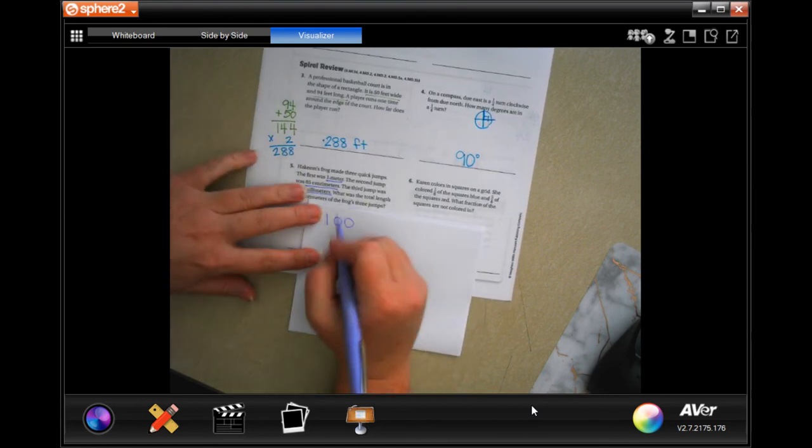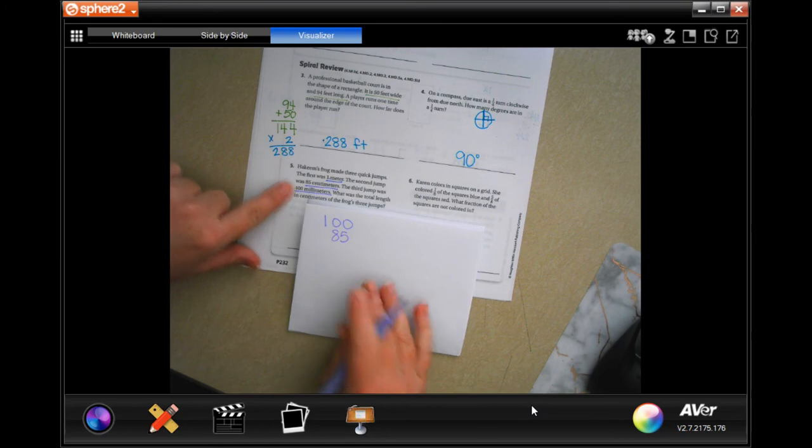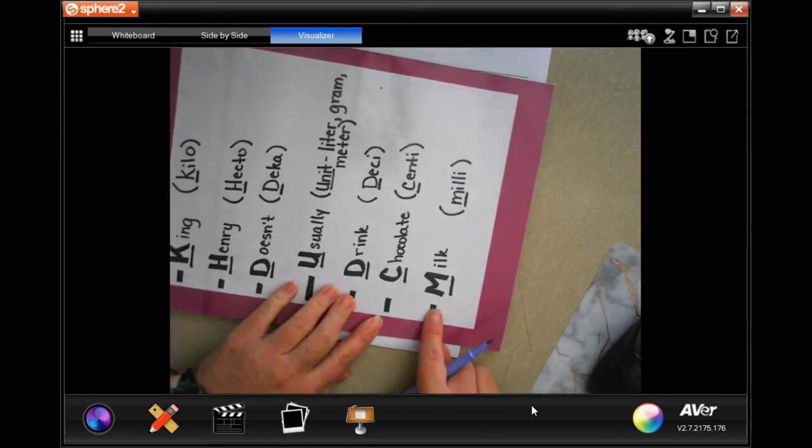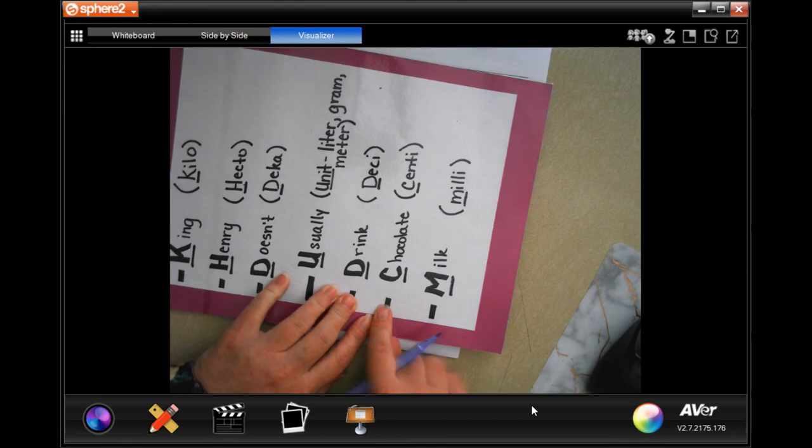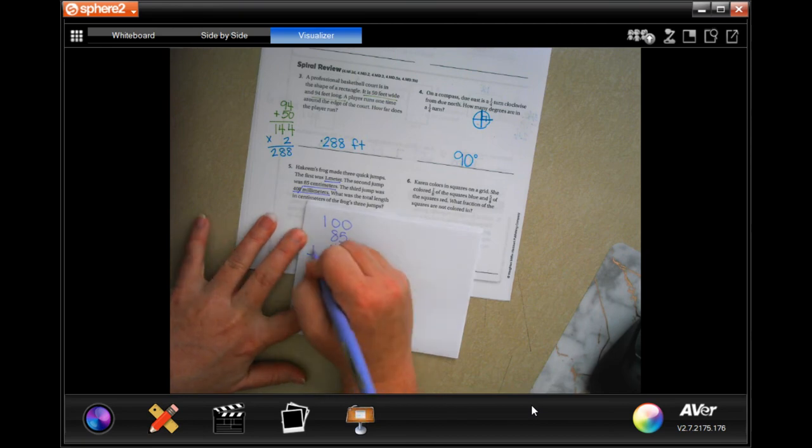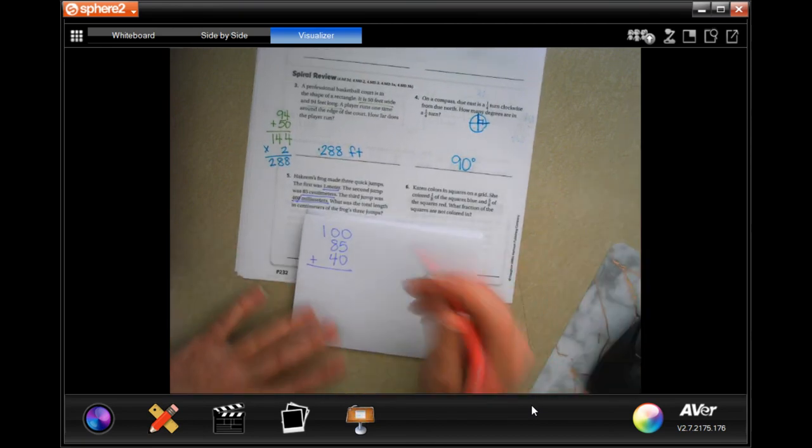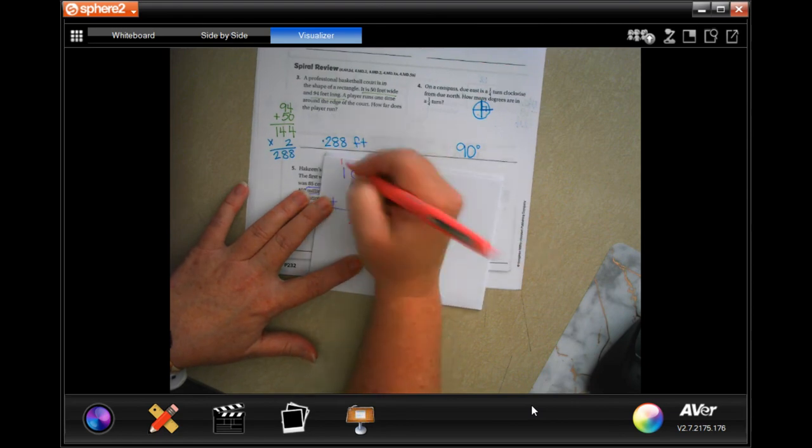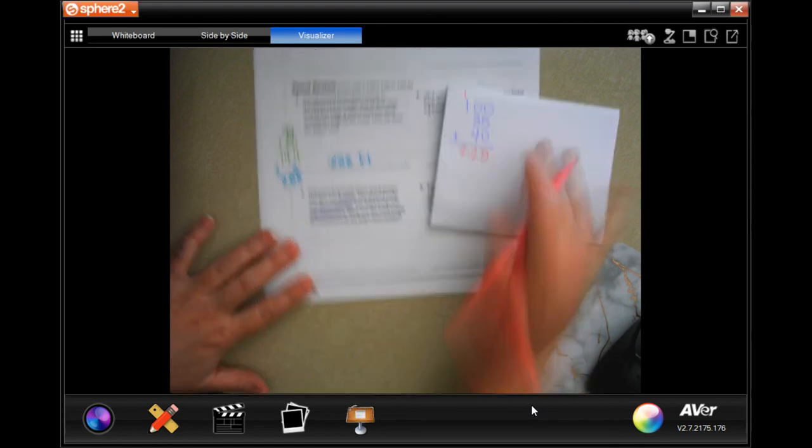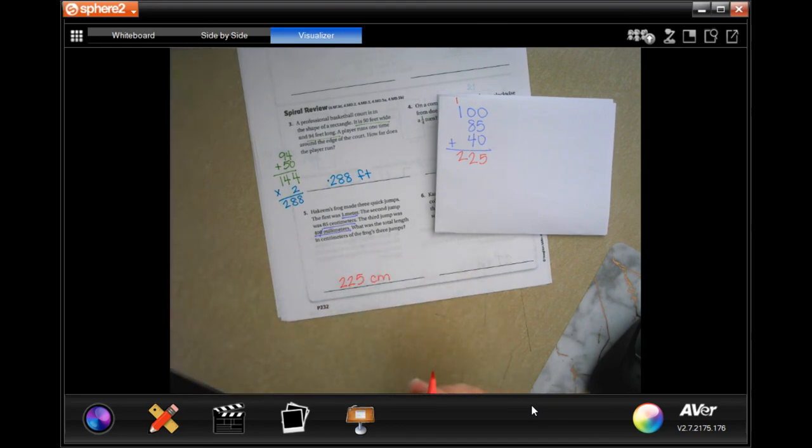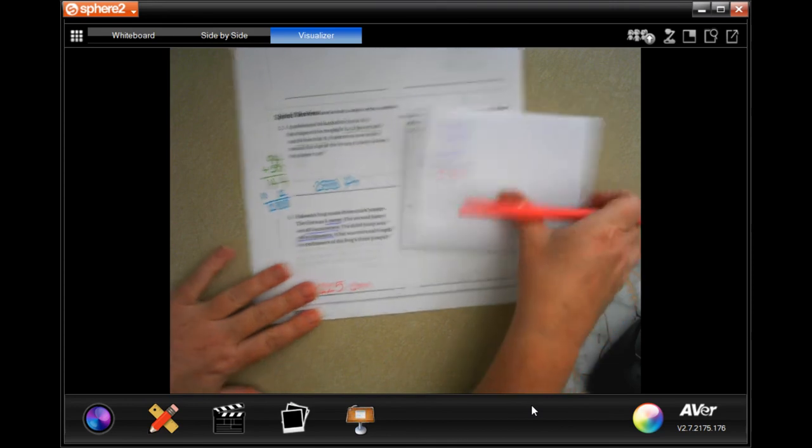We have 85 right here. And 400 millimeters. Well, going from milli to centi, we have to move that decimal back one time to the left. So we're actually going to cut off one of those zeros, which gives us 40. Add those guys up. So five, 12, carry the one, and two, 225 centimeters. Done.